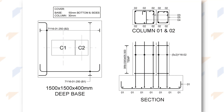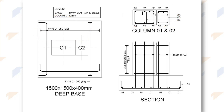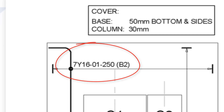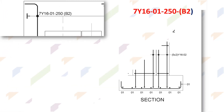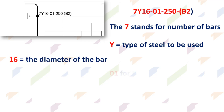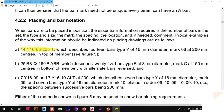Next we shall look at Clause 4.2.2, which is placing and bar notation. You may have seen reinforcement drawings before and wondered what all those letters and numbers next to the lines and circles are trying to say. For example, take this notation: 7Y16-01-250(B2). The 7 stands for the number of bars, Y stands for the type of steel, 16 stands for the diameter of the bar, 01 is the bar mark or identification code, 250 is the center-to-center spacing of the seven bars, and B2 means these bars will be placed in the second bottom layer.